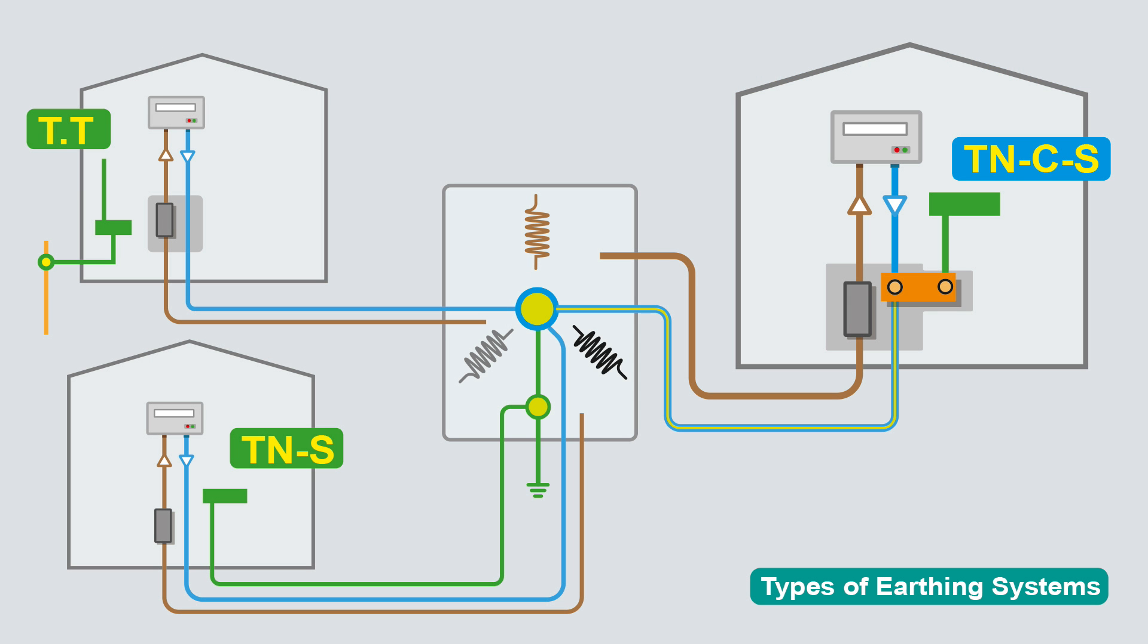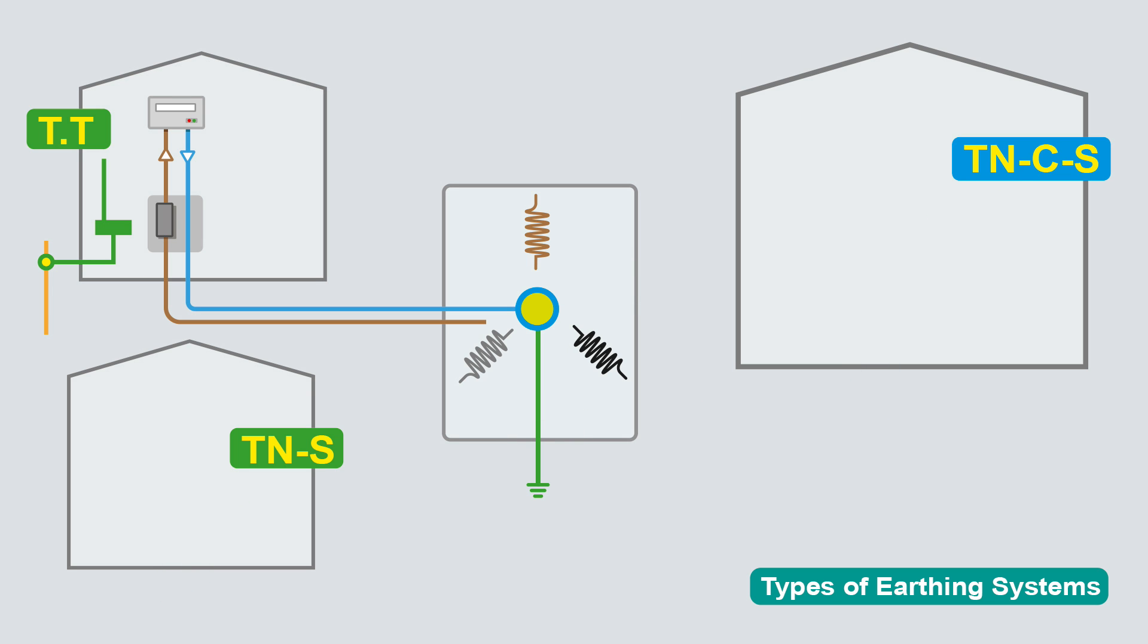There's three main types of earthing system in the UK. We've got the TT, TNS and TNCS. TNCS is the one that we're concerned about with regards to diverted neutral currents, but we'll just quickly go through them. With the TT, the distribution companies don't provide an earth. You provide that yourself. They'll give you the live and neutral from the transformer. You put an earth electrode in. That's what you connect to your main earthing terminal.